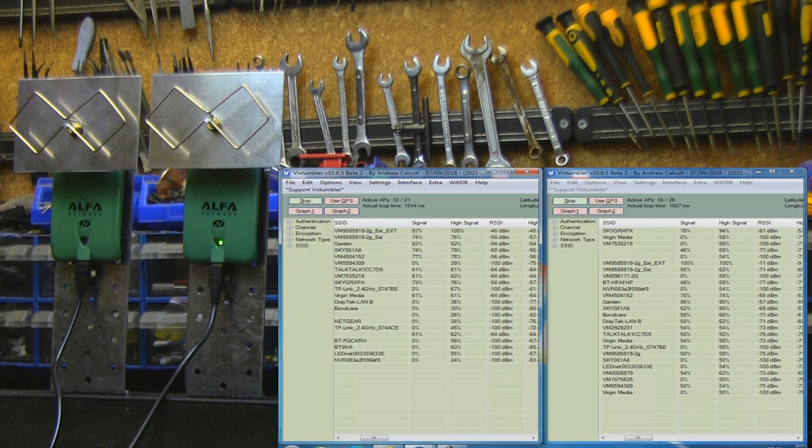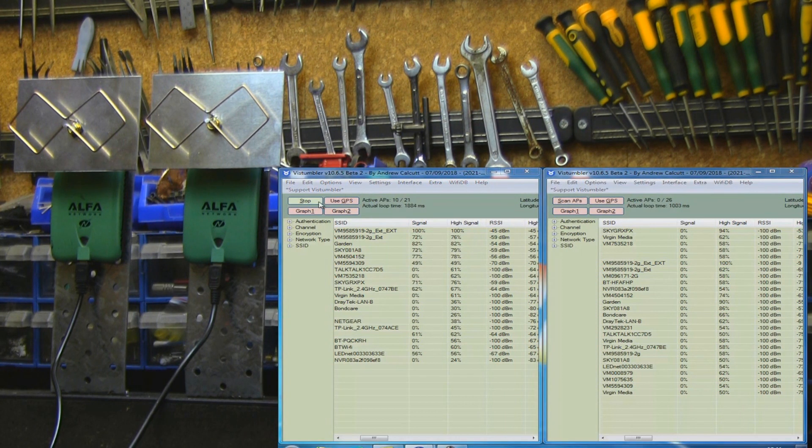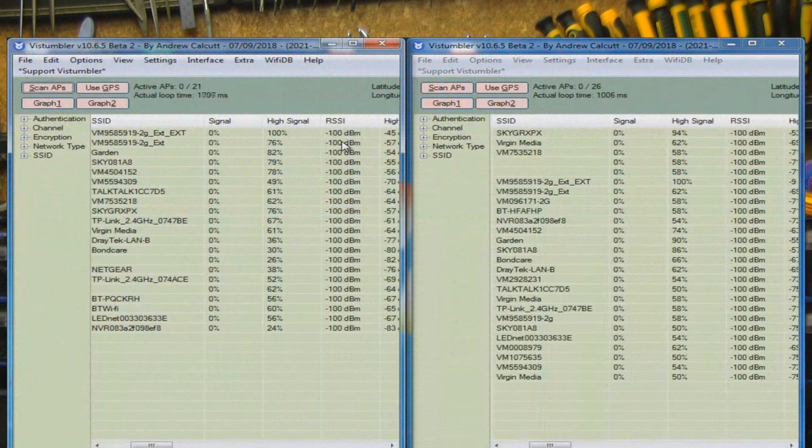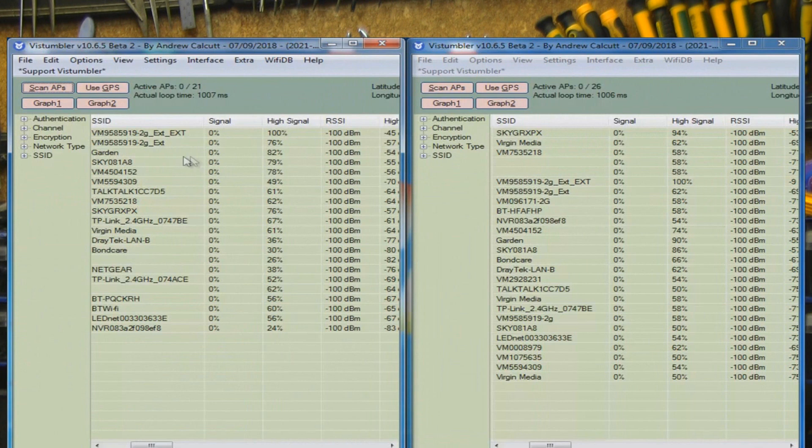Right, so that should be long enough then, so let's stop the scan and then let's take a look at some of these access points. So on the ungrounded one here, the isolated one, the garden access point is 82 percent, and on the grounded one it's 90 percent. So that kind of sits in with my claim that there's about 1dB of difference.